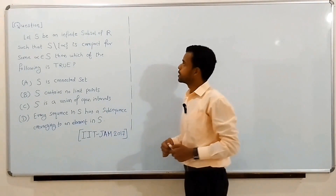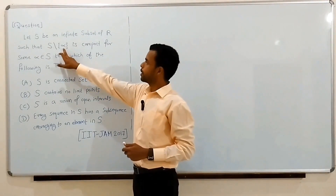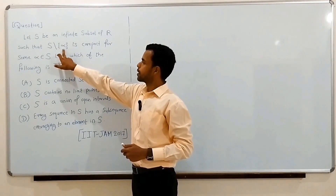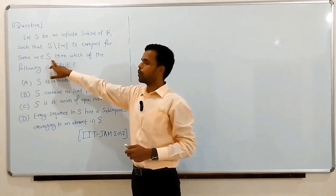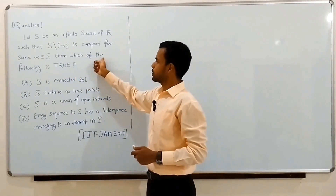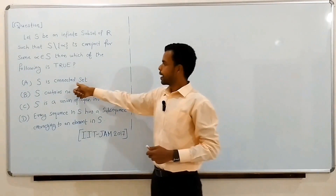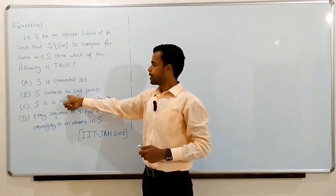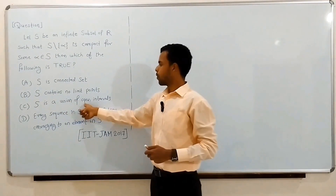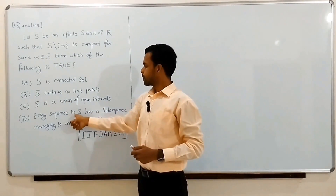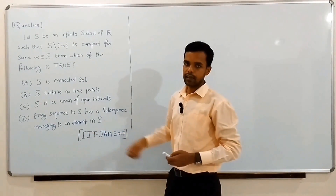The question is: let S be an infinite subset of R such that S minus the set containing alpha is compact for some alpha belonging to S. Then which of the following is true? Options are: (A) S is a connected set, (B) S contains no limit points, (C) S is a union of open intervals, (D) every sequence in S has a subsequence converging to an element in S.